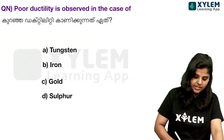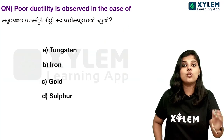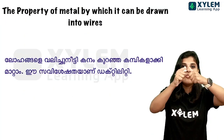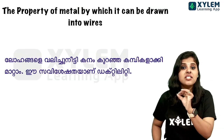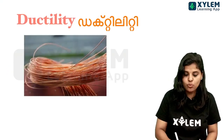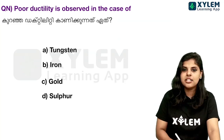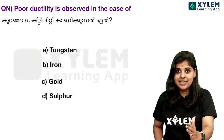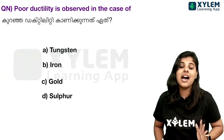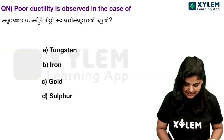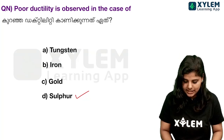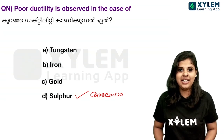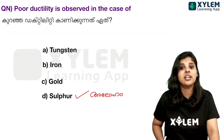Next question: Poor ductility is observed in which case? Ductility means the ability to be drawn into wires. The options are iron, gold, and sulfur. Sulfur is a non-metal and has poor ductility. Metals like tungsten are used for filaments because of high ductility.